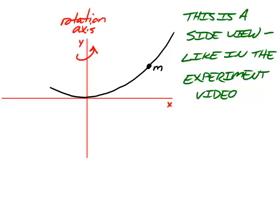If you haven't seen any other videos, you may want to. This sketch shows a side view of the water, just like in the video. The black dot labeled M represents a small mass of water on the curved surface. The container is rotating around the y-axis.